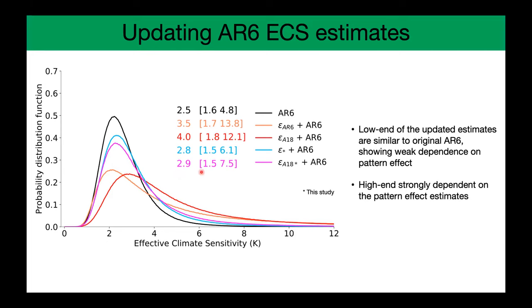When I update the ECS by considering both the dataset dependency and the model dependency on the pattern effect, the median ECS remains the same. The low end of these updated ECS estimates is similar to the original AR6 estimate, showing a very weak dependency on the pattern effect, whereas the upper end is highly dependent on the pattern effect estimates. With this, I'll stop here.